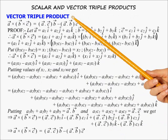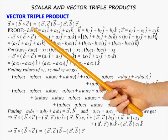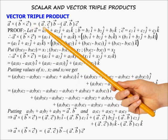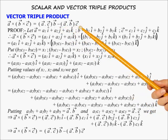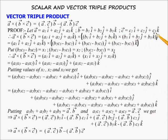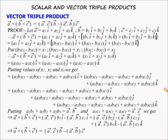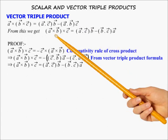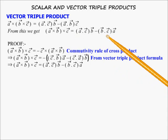Vector triple product. The formula is: a×(b×c) = (a·c)b − (a·b)c. To prove this, we write the vectors in component form; the proof is a little lengthy, but the formula is important to remember. From this we also get: (a×b)×c = (a·c)b − (b·c)a.